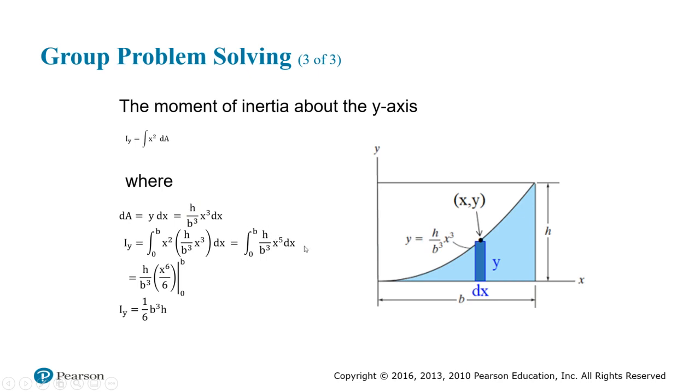Within the integral, we have X to the fifth DX. Use your power rule for computing an antiderivative. Increase the power by one. X to the fifth becomes X to the sixth. Divide by six. Evaluate your upper bound minus your lower bound.